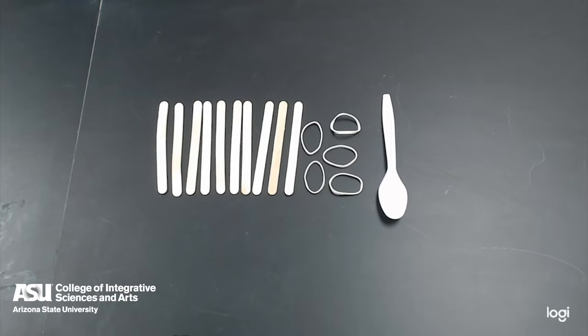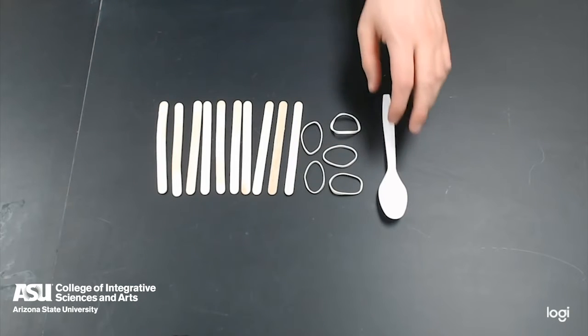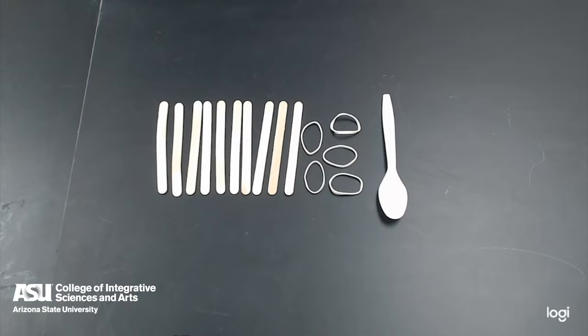First make sure that you have all your materials available to you. We are going to need ten popsicle sticks, five rubber bands, and one plastic spoon or spoon that you'd like to attach to this and that's it.